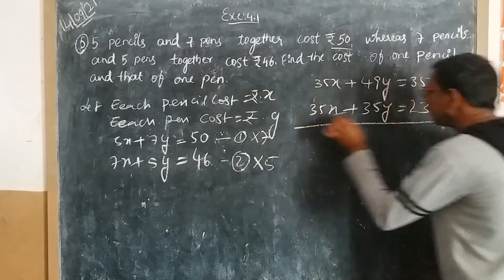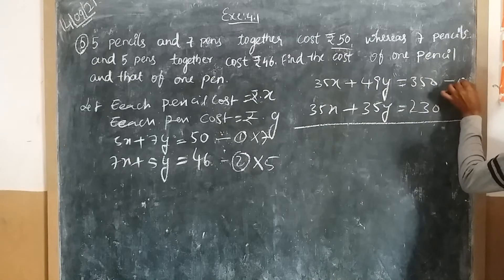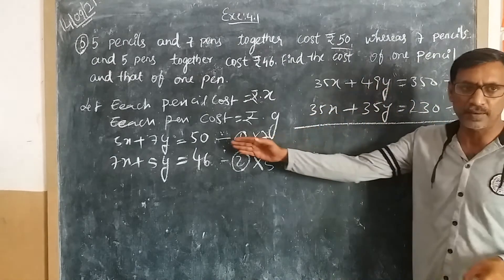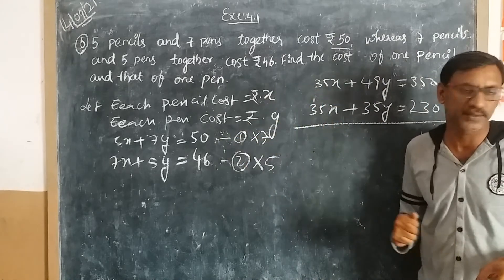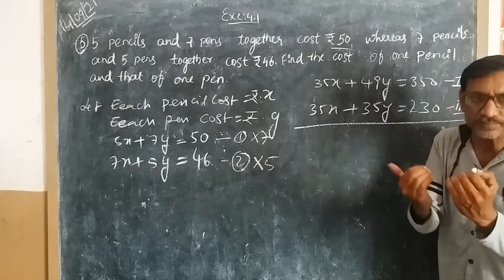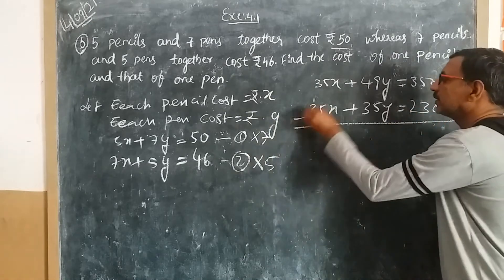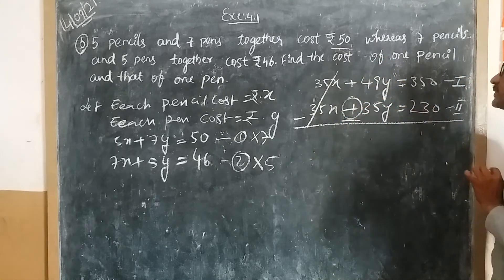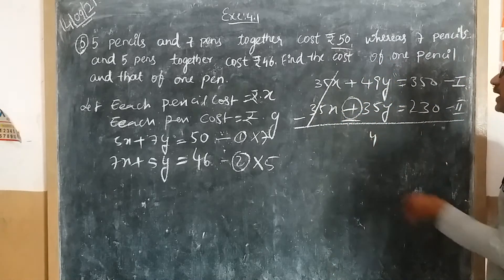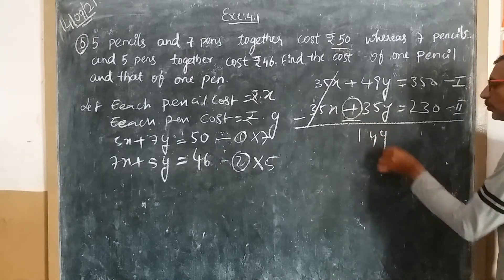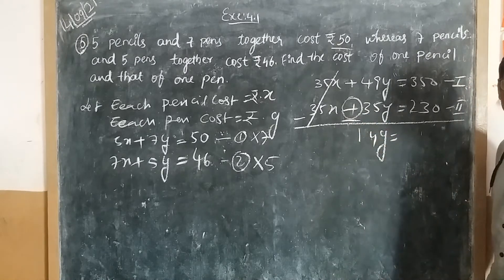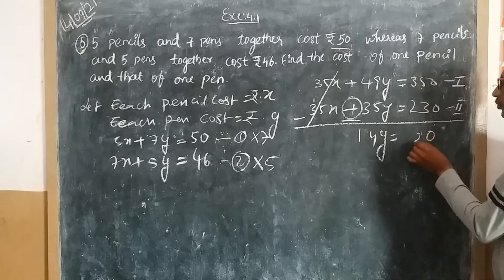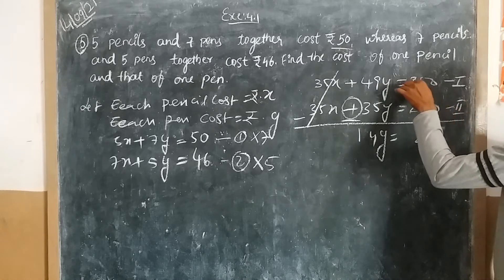These two are my modified equations. By subtracting these two equations, the 35x cancels out. 49y minus 25y gives 24y, and 350 minus 230 equals 120. So 24y = 120.